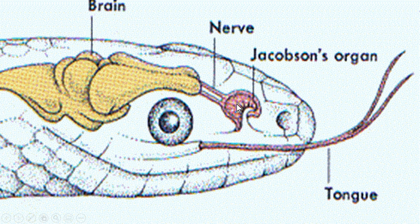Aur phir Jacobson's organ se kuch nerves jaati hain brain tak, jinke through saari ki saari information brain ko transfer ho jaati hai. Friends, yahi complete process tha snake ke andar smell ko sense karne ka, jo maine explain kiya. I hope that it will be quite interesting and informative for all of you.